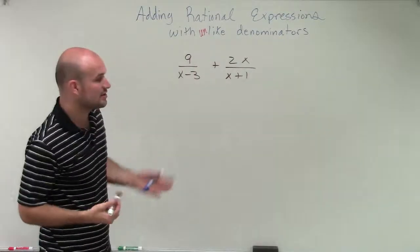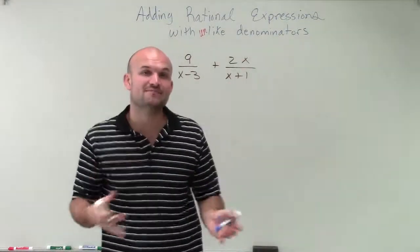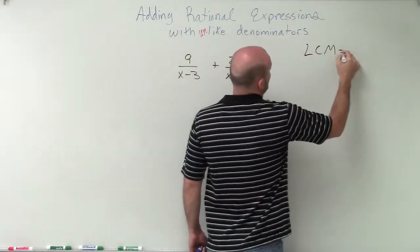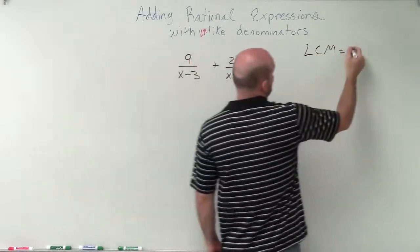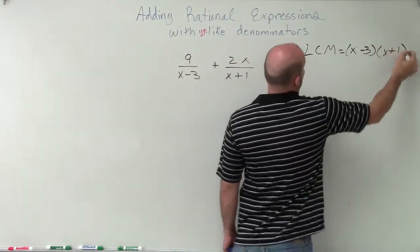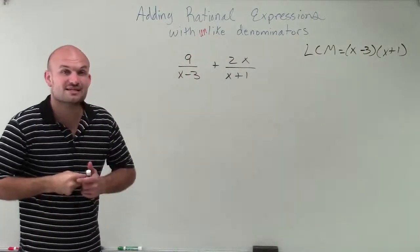I can't simplify these any further, but what I can do is I can just multiply my two denominators, and that will give me a common denominator. And that's going to be our case, which is also going to be our least common denominator, x minus 3 times x plus 1. So therefore, if I'm going to say my least common multiple is x minus 3 times x plus 1...